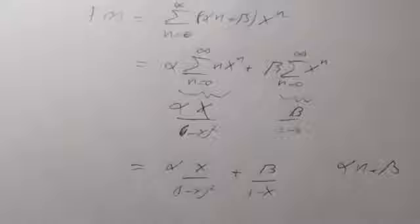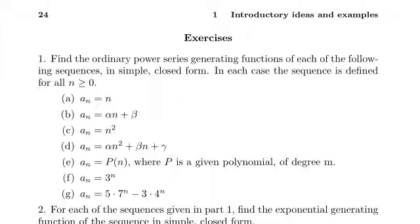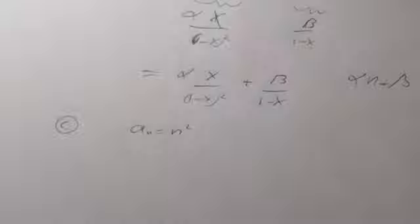So a_n = αn + β is a polynomial in n. I wonder what happens if you do it for a polynomial in general — there must be a general form. And indeed, that's where question part (e) is going: a_n equals p(n) where p(n) is a given polynomial of degree n. Let's see where this goes. Now part (c) wants us to do n squared. These exercises often take you through examples not covered in the chapter, which is nice to know.